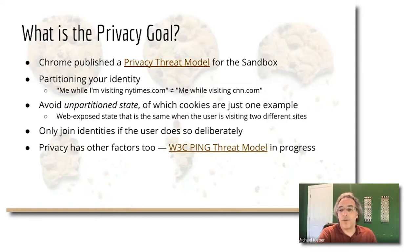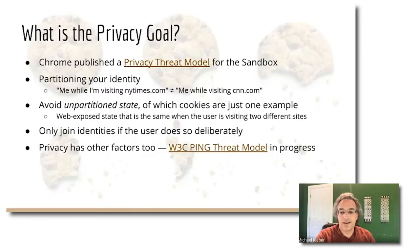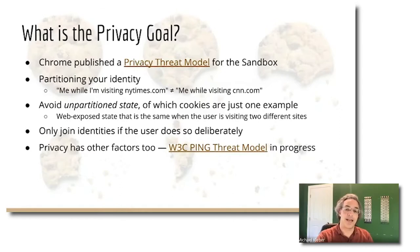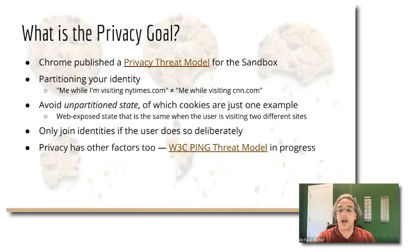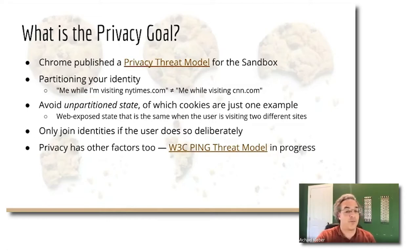Third-party cookies are one example of what we should probably more generally refer to as unpartitioned state — any web-exposed state which is the same when the user is browsing two different sites. APIs like local storage, IndexedDB, or service worker cache storage are all examples of state which we're going to partition so you can't store something while the user is visiting one site and then retrieve it while they're visiting another. There may be times when the user genuinely wants multiple sites to know the same identity — like their credit card info — and that is fine as long as the user is giving out information deliberately. But we don't want it to happen automatically.